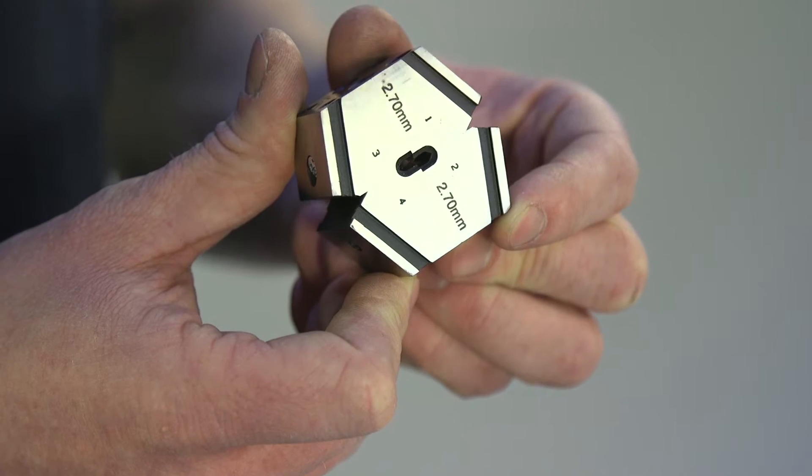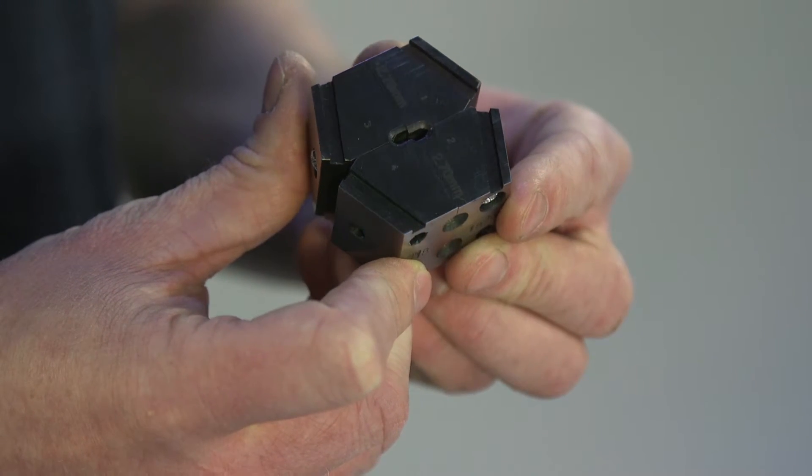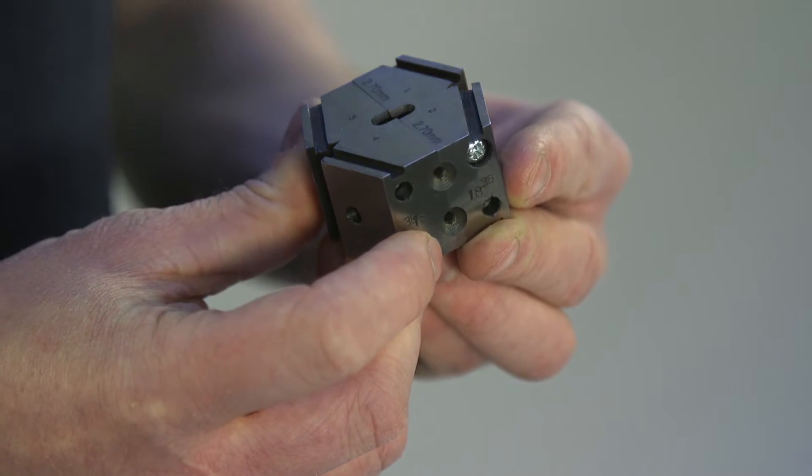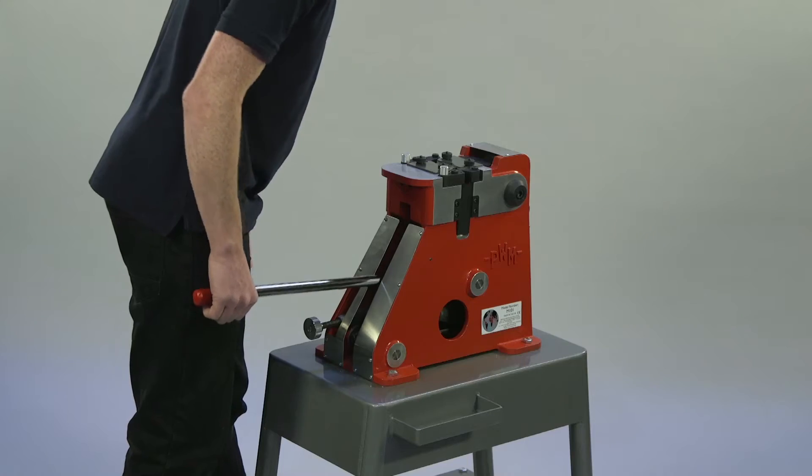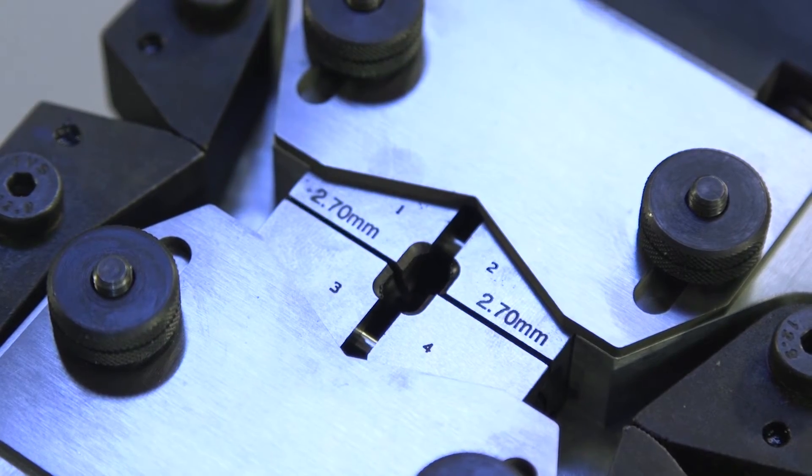These dies are precision engineered by PWM's own skilled technicians to produce strong, consistent welds. Once the die is fitted, the die gap is set according to the thickness of the material.